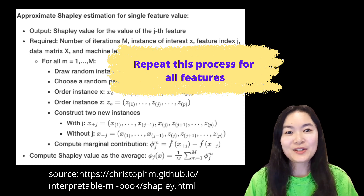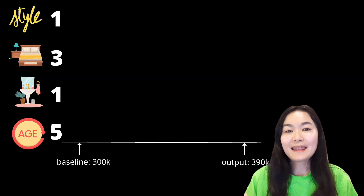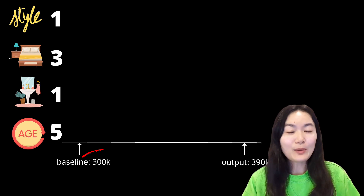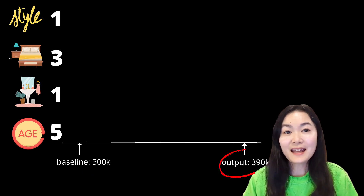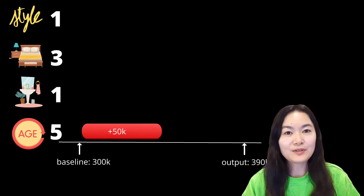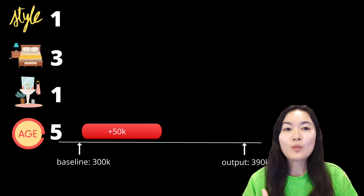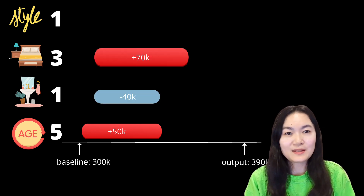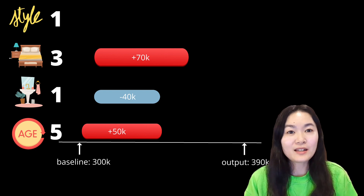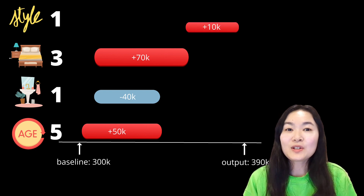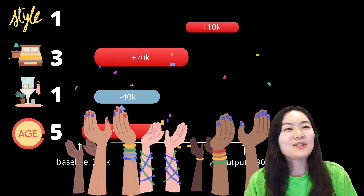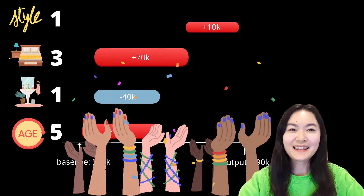Shapley values for all features explain why the expected value or the average prediction of the model might be 300k and our output is 390k. For example, 5 years old contributes 50k, 1 bathroom contributes 40k, 3 bedrooms contributes 70k, and style 1 contributes 10k. Those four features contributed to the 90,000 difference. Now you know how to calculate Shapley values. Thank you!